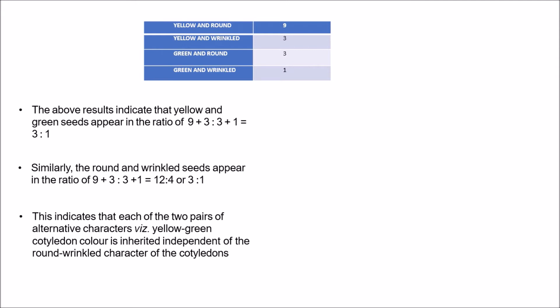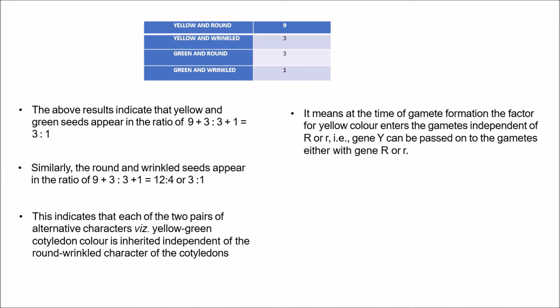This indicates that each of the two pairs of alternative characters — yellow-green cotyledon color — is inherited independently of the round-wrinkled character of the cotyledons. Each pair exhibited independent characters of the cotyledon. It means at the time of gamete formation, the factor for yellow color enters the gametes independently of R or r — that is, gene Y can be passed on to the gametes either with gene R or with gene r.